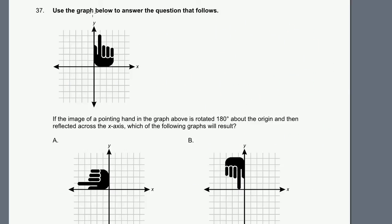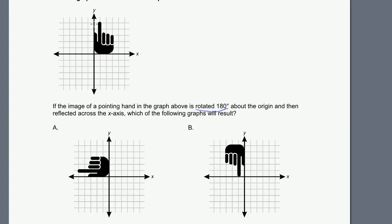Problem 37. Use the graph below to answer the question that follows. We have a drawing of a hand pointing up. If the image of a pointing hand is rotated 180 degrees about the origin and then reflected across the x-axis, which of the following graphs will result? Let's do it step by step.